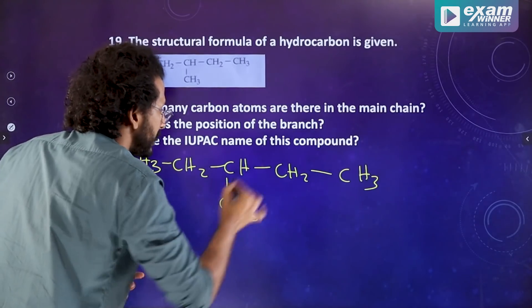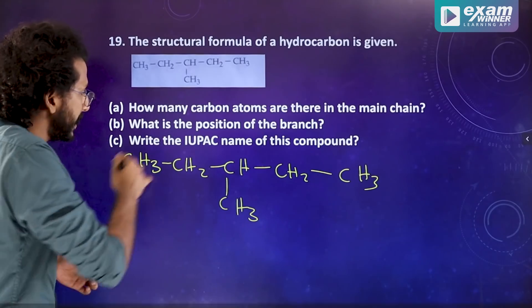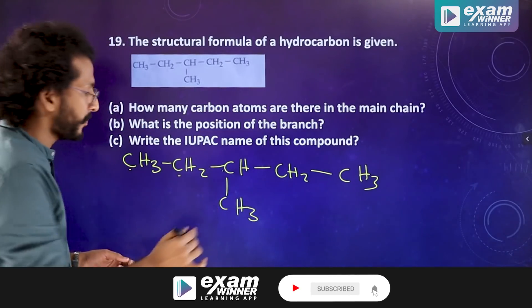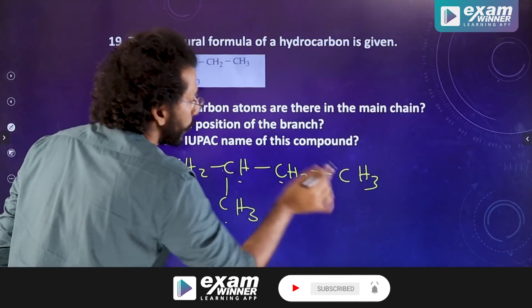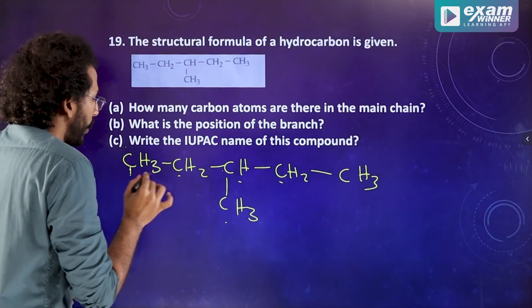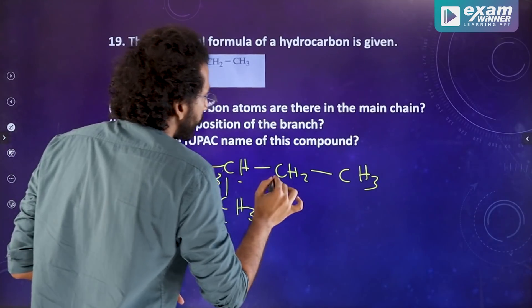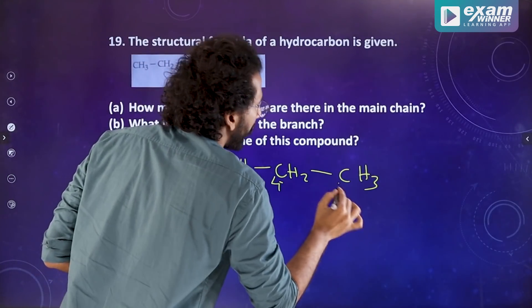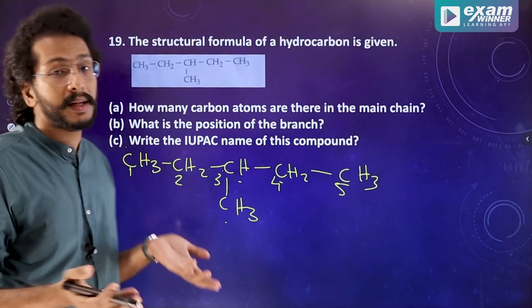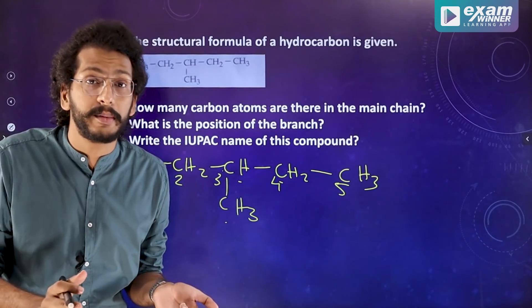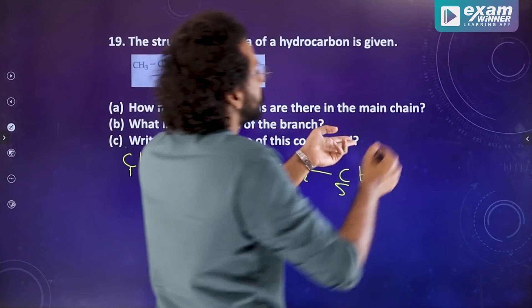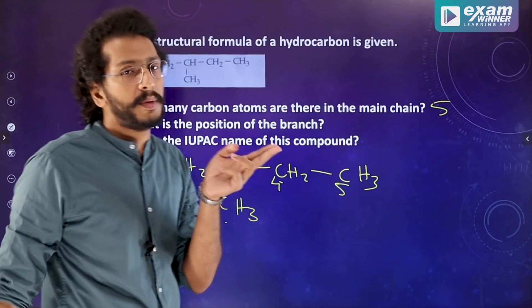Counting the carbon atoms: 1, 2, 3, 4 in one path and 1, 2, 3, 4, 5 in another. The maximum number gives the main chain with five carbon atoms.